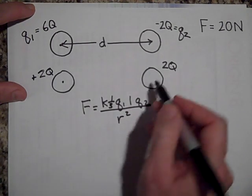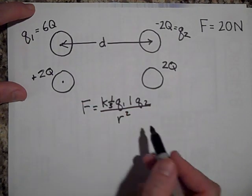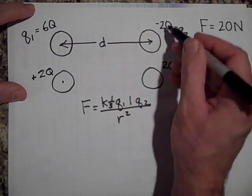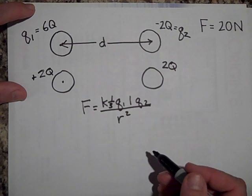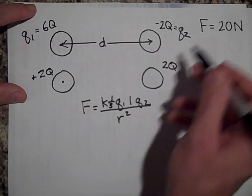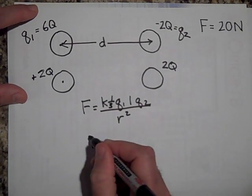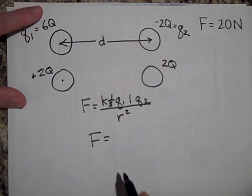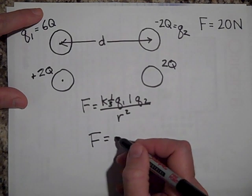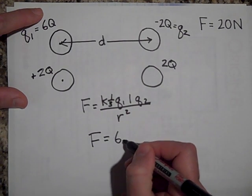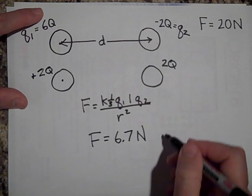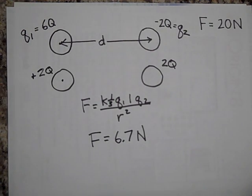Even though this now will be a repulsive force between these two where it wasn't attractive, the magnitude has stayed the same. So my force will be one third of the old force. So one third of that force, the new force will be one third of 20. So 20 thirds or 6.7 Newtons. But it will be a repulsive force this time.